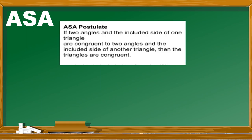Next is ASA, which stands for Angle-Side-Angle. If two angles and the included side of one triangle are congruent to two angles and the included side of another triangle, then the triangles are congruent. Earlier we had the included angle; now in ASA, we have the included side — it is the side between two angles.